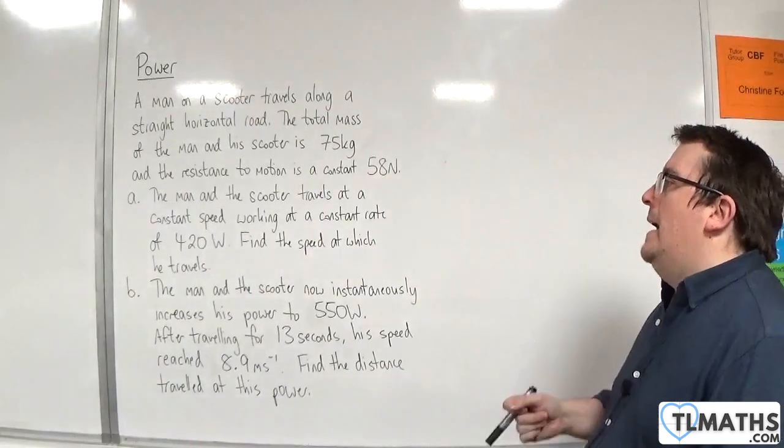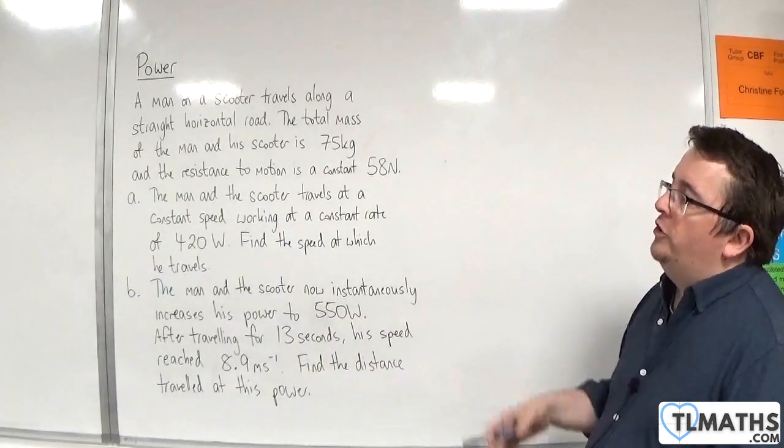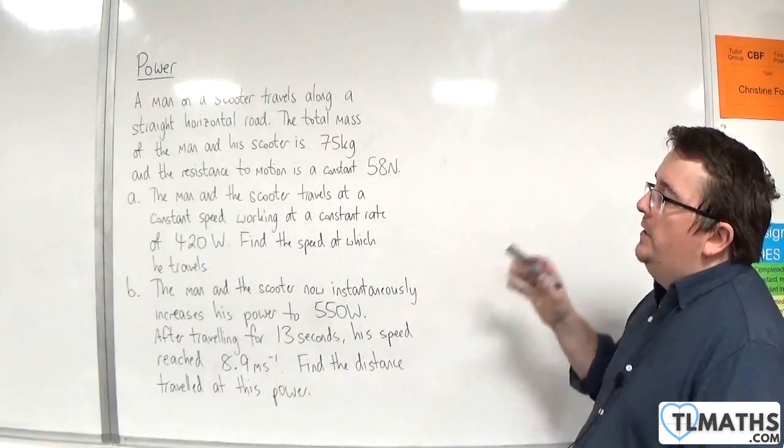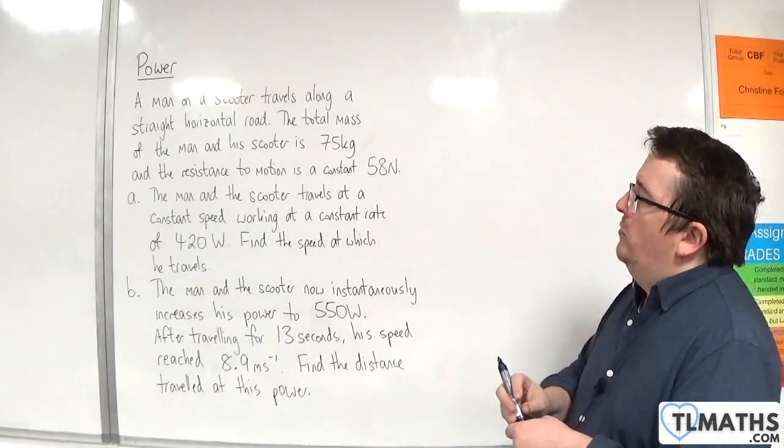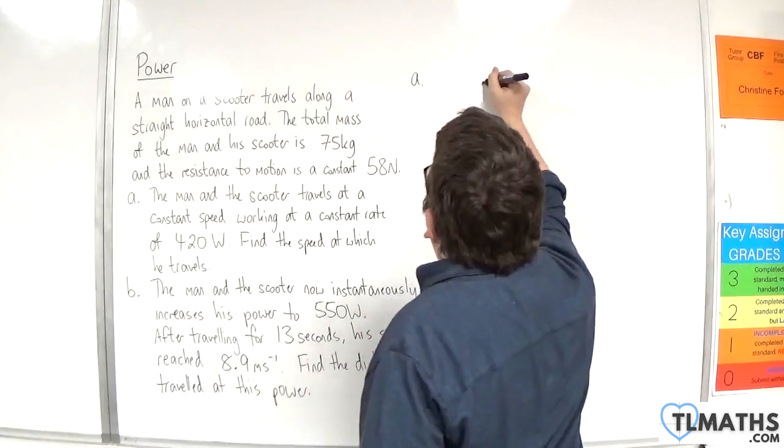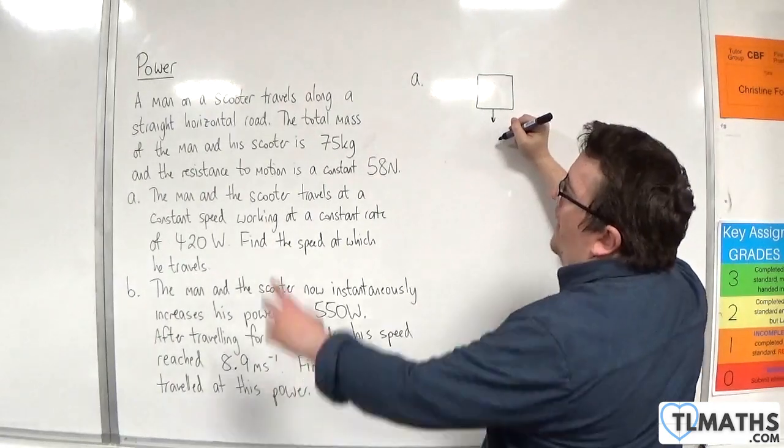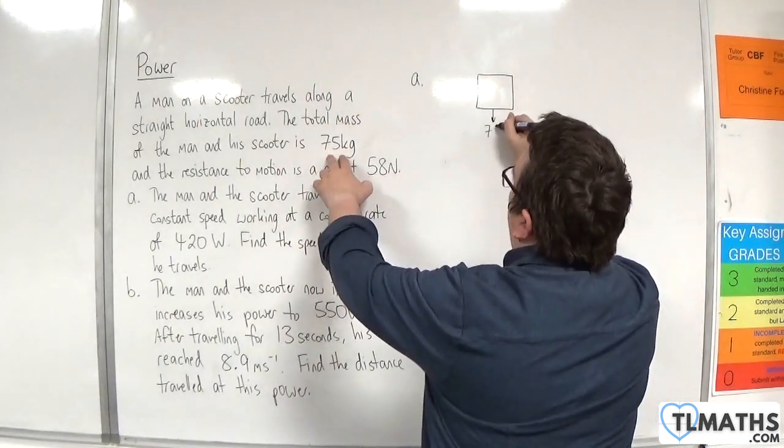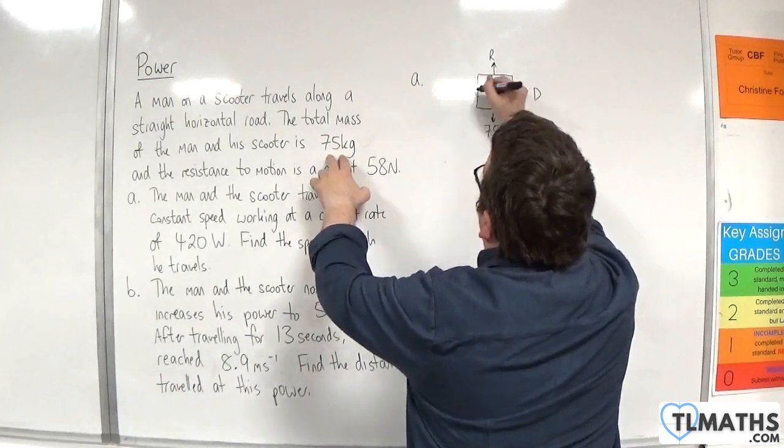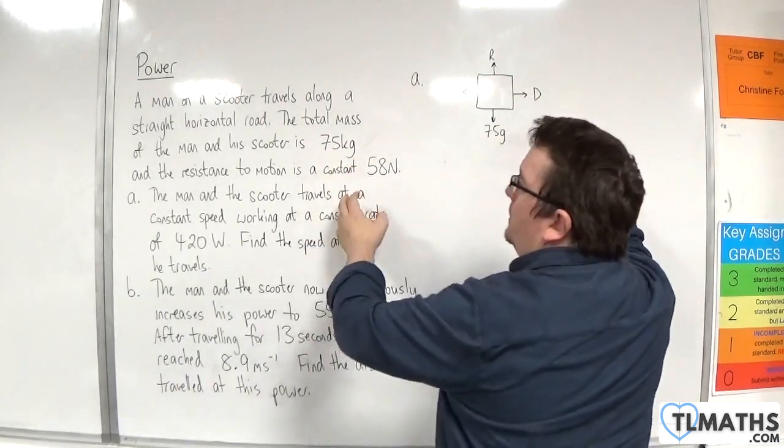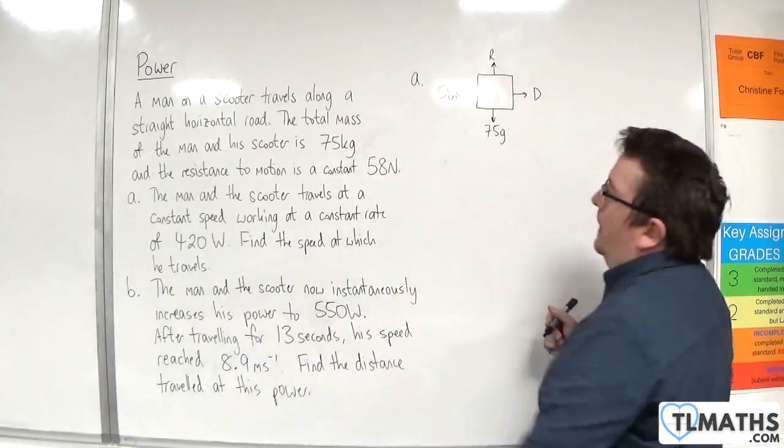Part A. The man on the scooter travels at a constant speed working at a constant rate of 420 watts. Find the speed at which he travels. Let's just draw a little diagram to represent this. Man on a scooter, and we've got a mass of 75 kilos, so a weight of 75g. Normal reaction force, we've got a driving force going towards the right, and a resistance force of 58 newtons.